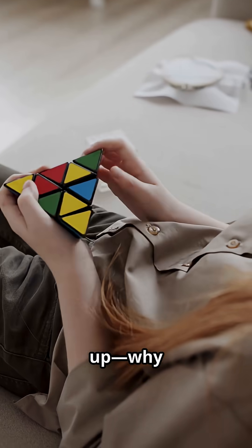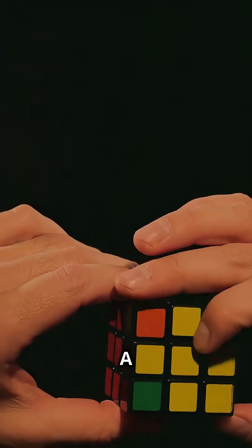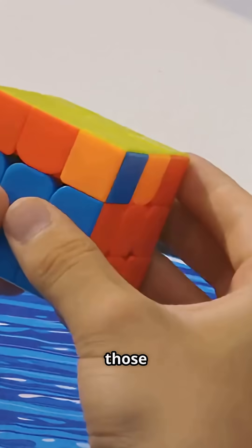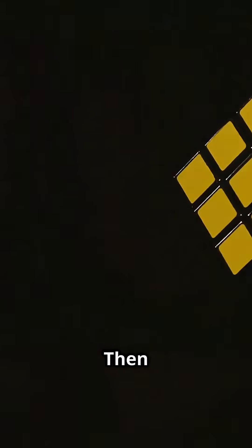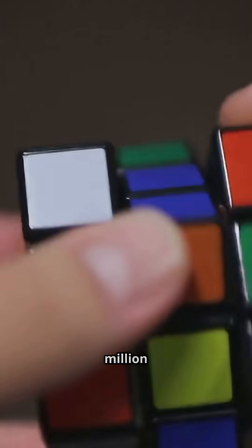First up, why 43 quintillion? A Rubik's Cube has 8 corners. Those can be arranged in 40,320 ways. Then there are 12 edges, and those shuffle around in 479 million combinations. Add two twist rules.